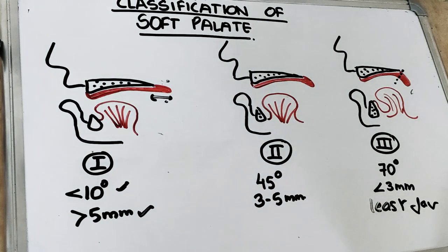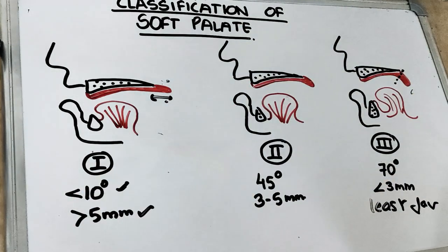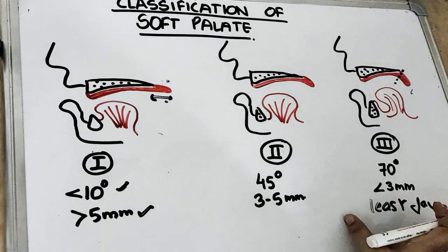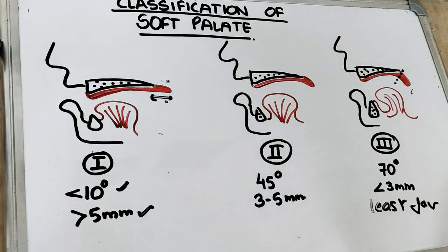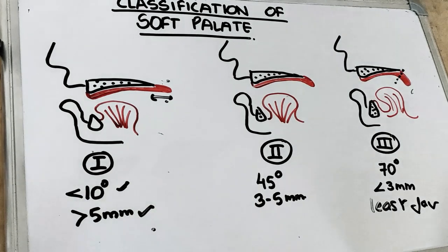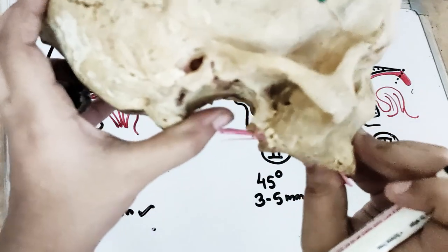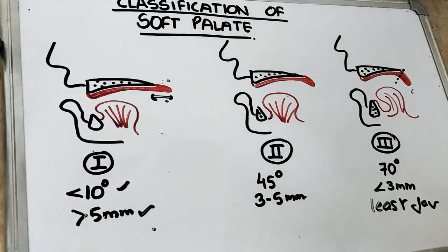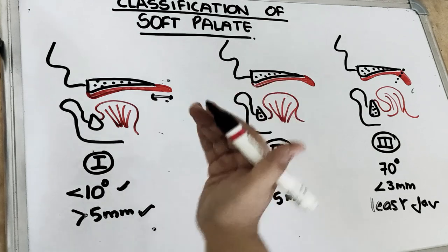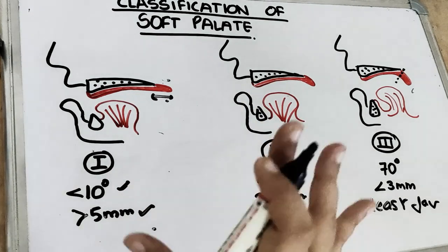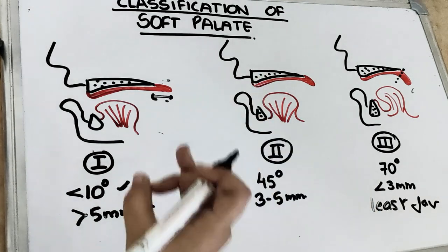PPS is the area which aids in the retention of the denture. If you have a good specific area for PPS, there is going to be good retention. If the PPS area is very less, there is going to be less retention. PPS is the posterior extension of the denture border which aids in retention. So Class 1 soft palate — where the soft palate flexes less than 10 degrees — gives us more than 5 mm of tissue coverage and is the best type for retention.